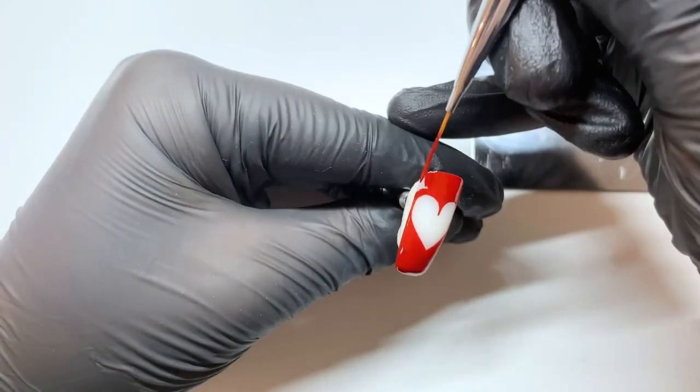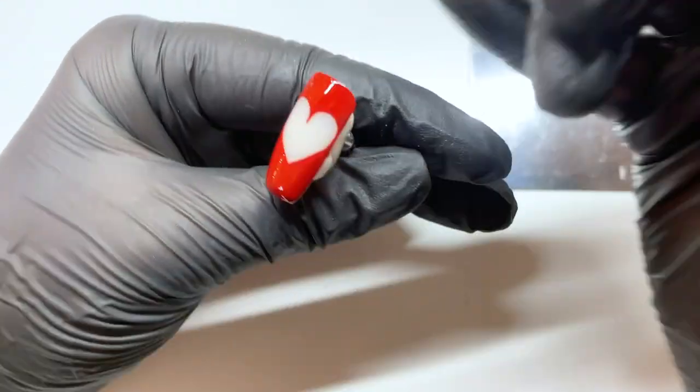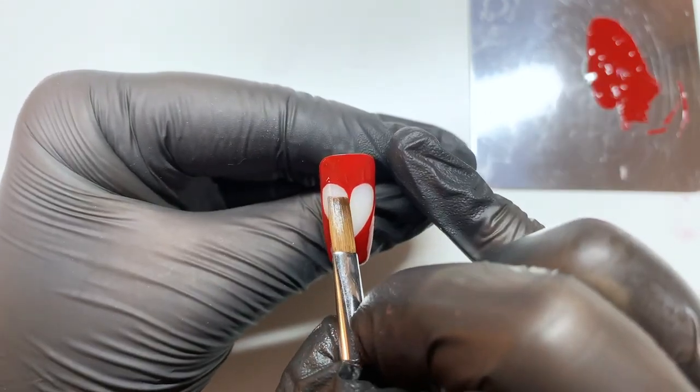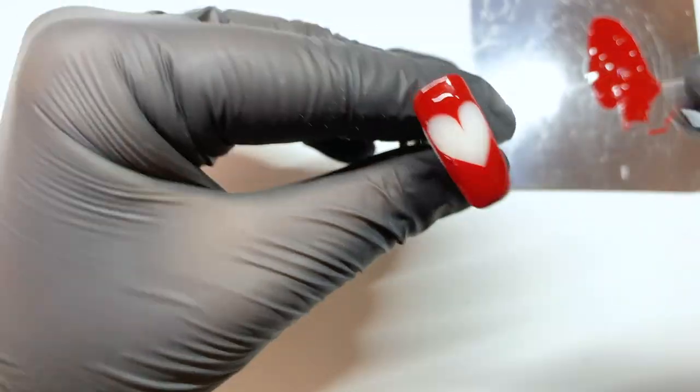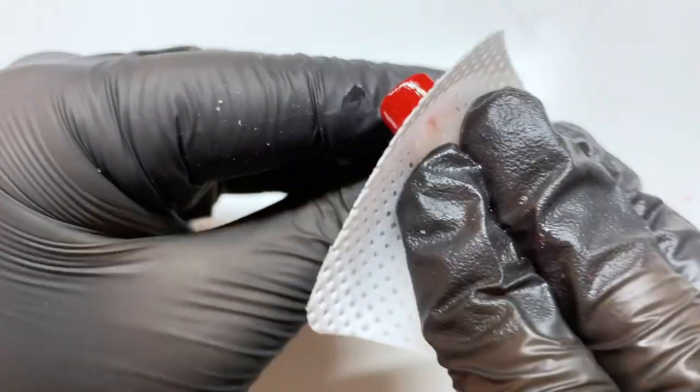And just to make sure that the heart is perfect, I just like to take a flat brush and just clean up that middle line that I created at the start. This will just give the front of the heart a lovely point. Then I'm going to finish this design by doing a gloss top coat and setting in the lamp for 30 seconds.